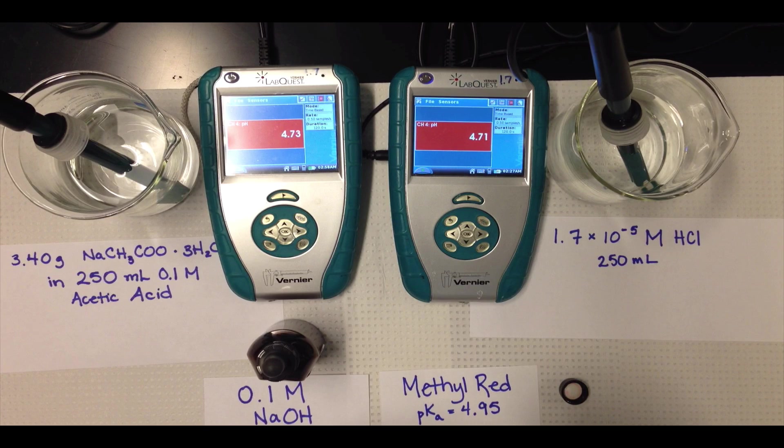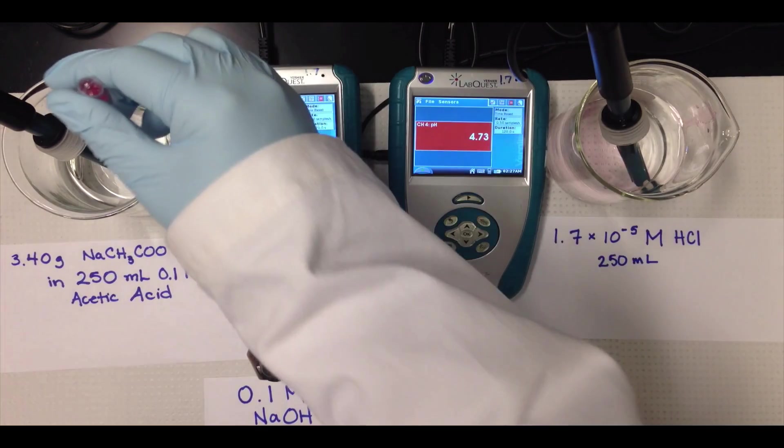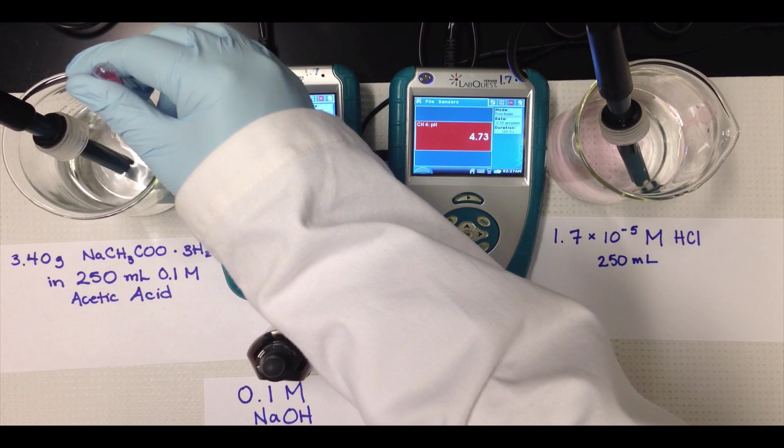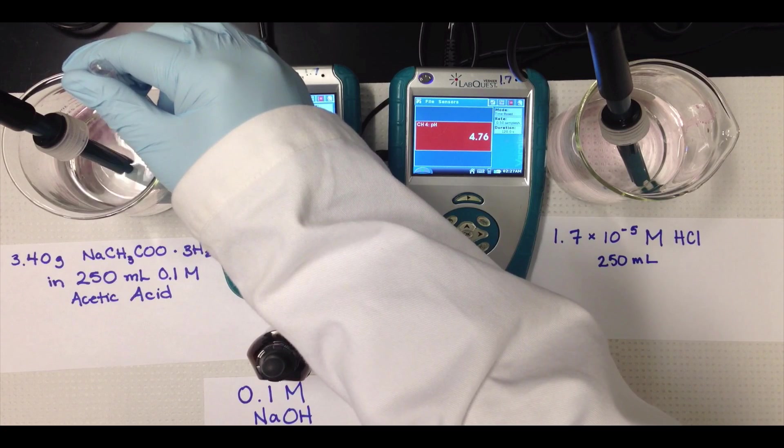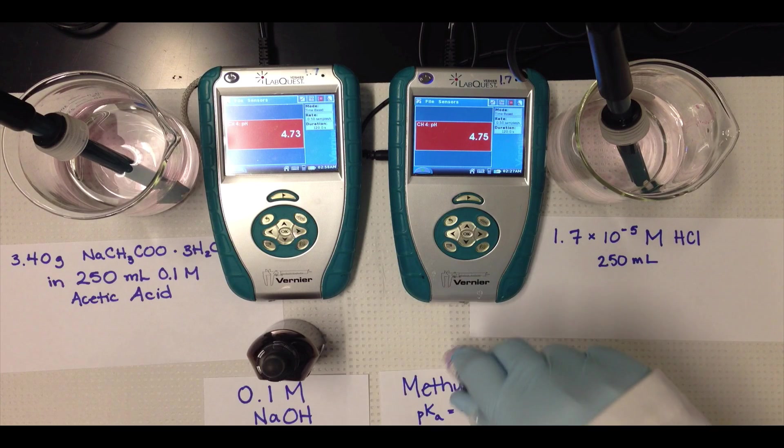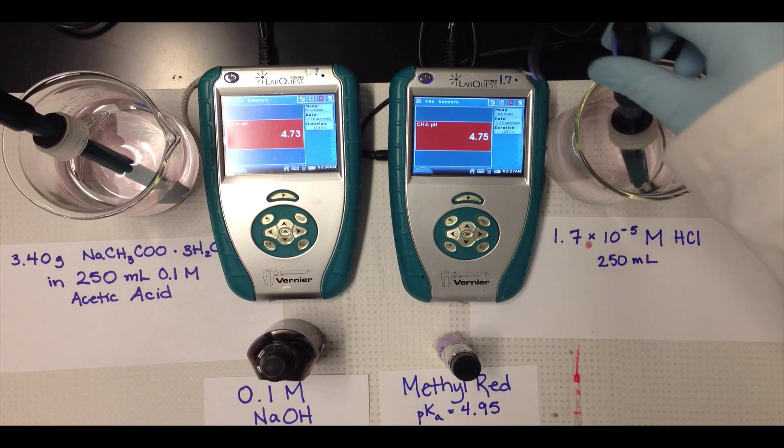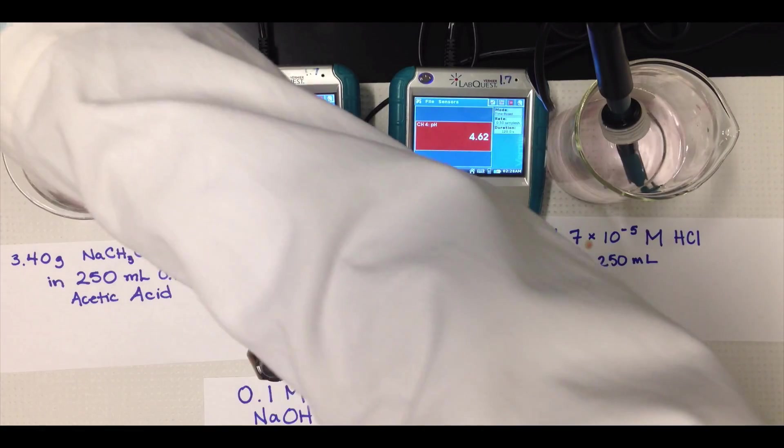What we have here are two solutions with equal pHs, approximately 4.7. On the right, we have a simple strong acid solution of HCl at a concentration of 1.7 times 10 to the negative 5 molar, which if you take the negative base 10 logarithm of that comes out to a pH of 4.7. We have 250 milliliters of that, and we also have 250 milliliters of a buffer solution on the left-hand side that contains acetic acid as well as sodium acetate, and we've adjusted the amounts of the acid and its conjugate base such that the pH is again 4.7.